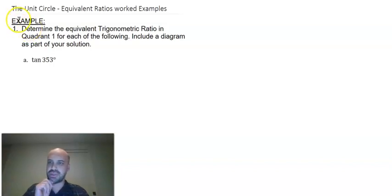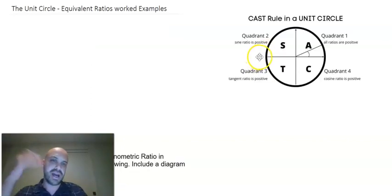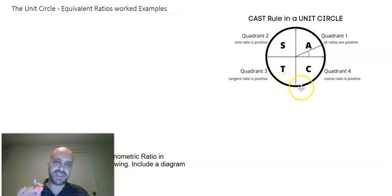Now, before I jump into example 1a, I do want to show you something that might make this easier for you. It's called a cast diagram, C-A-S-T. Now, if you've understood everything in the previous videos, you don't really need this, but it can be very helpful. So what does it say? In quadrant 1, all of our ratios are going to be positive. Sin, cos, and tan, they're all going to be positive in quadrant 1.